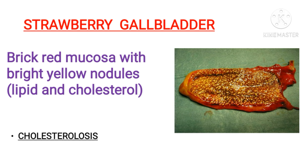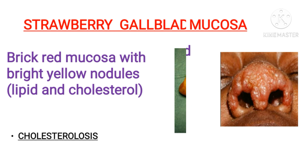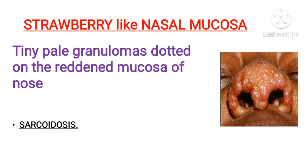Next is strawberry gallbladder, most commonly due to cholesterolosis. Cholesterolosis is the focal accumulation of cholesterol-laden macrophages in the lamina propria of the gallbladder. The mechanism of accumulation is yet unknown. This gives the mucosa a brick-red appearance with bright yellow nodules — the yellow nodules being lipids and cholesterol — which as a whole resembles the appearance of a strawberry.